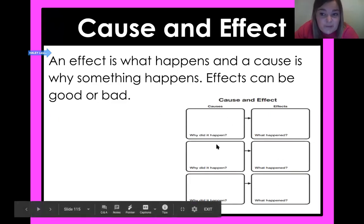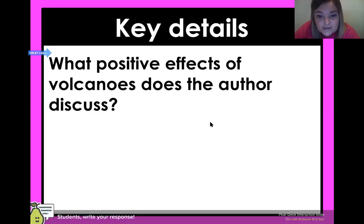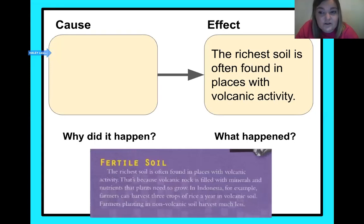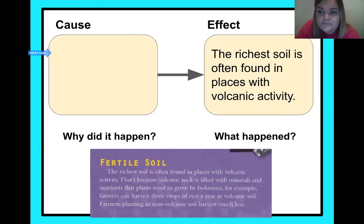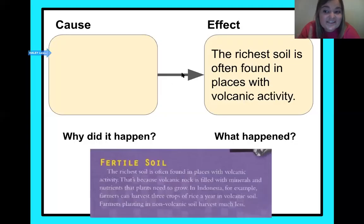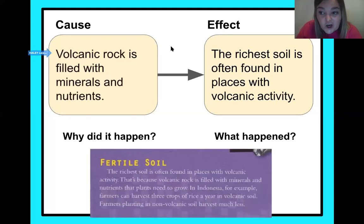Get a piece of paper or a whiteboard — we're going to go through some cause and effect examples from the text. First positive effect: 'The richest soil is often found in places with volcanic activity.' What causes this to happen? Go back in that text and figure out why the soil is rich near volcanoes. Pause your video and see if you can figure it out first without any help.